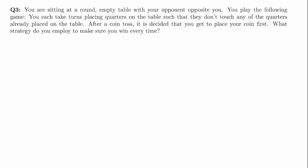Alright, so for question three: you're sitting at a round empty table with your opponent opposite you. You play the following game — you each take turns placing quarters on the table such that they don't touch any of the quarters already placed on the table. After a coin toss, it is decided that you get to place your coin first. So what strategy do you employ to make sure you win every time?